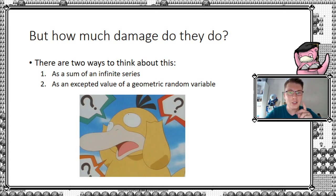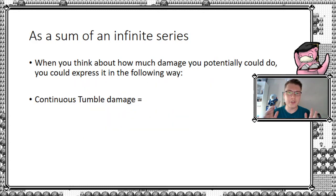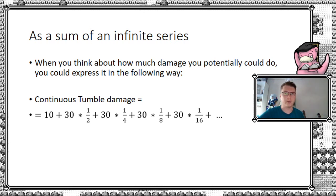But it doesn't stop me from saying the word geometric. So let's look at number one, shall we? So if we look at an infinite series, what is an infinite series? Well, that's something that potentially goes on forever and ever. So now we have continuous tumble here. You can think about the damage in the following way. We have base damage of 10. That's just by reading the cards. It's 10 damage. And then it says, flip until you get tails. For each head, you do 30 damage. But this you can represent the following way as I've done on the screen here.